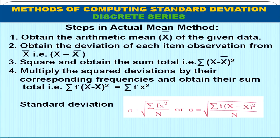The steps in the actual mean method for discrete series: first, obtain the mean — note that the mean formula changes because it is a discrete series. Then obtain the deviation of each item from mean (x − x̄), square it, multiply with the corresponding frequency, and sum up to get Σfx². The formula is: σ = √(Σf(x − x̄)² / n).